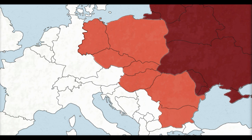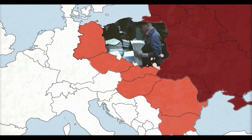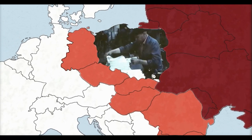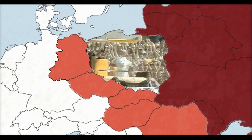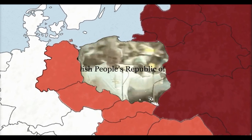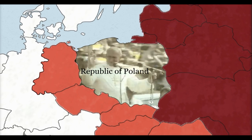Gorbachev likely hoped that Eastern Europe's communist governments themselves would move closer to a democratic system that could be reformed, but instead the communist parties in Eastern Europe lost power completely, one by one. In Poland, free elections were opened up by the communist government, but it was immediately voted out. Poland's population voted in the right-leaning Solidarity Party in August 1989, which changed the country's name and constitution to steer it westward.